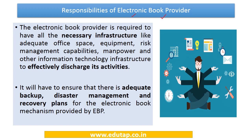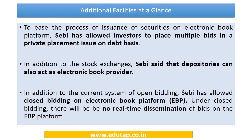The first additional facility in the circular is allowing investors to place multiple bids in a private placement issue on a debt basis. Previously this was not permitted, so this is a key new provision aimed at easing the process of issuance on the electronic book platform.